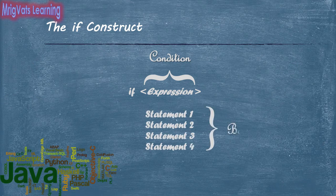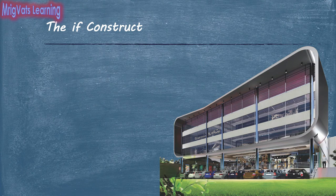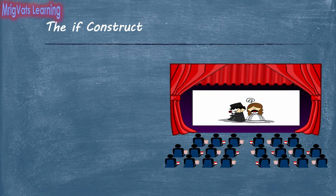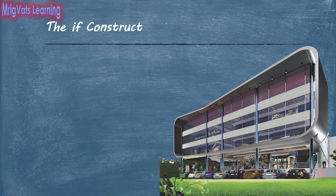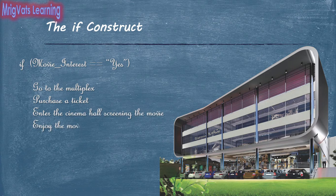After the condition, the if construct has a body that contains various statements that should be run if the condition is true. For example, when you visit a shopping mall, you check if you are interested in a movie. If yes, you go to the multiplex and purchase a ticket. Then you enter the cinema hall screening the movie and enjoy the movie. As soon as the movie is over, you exit the cinema hall. Finally, you exit the shopping mall.